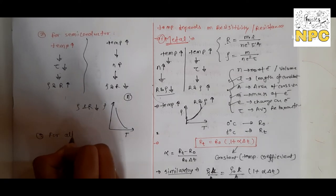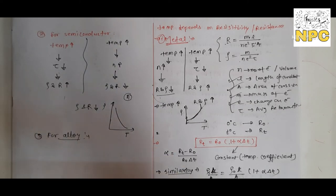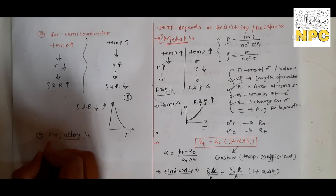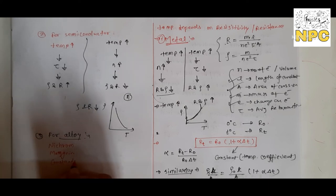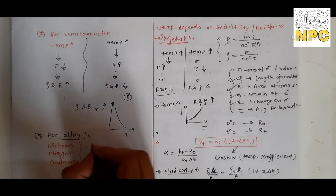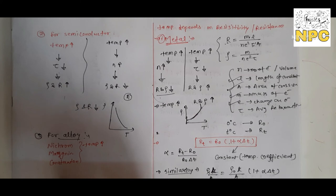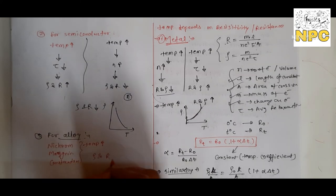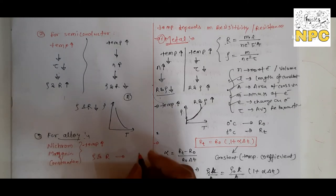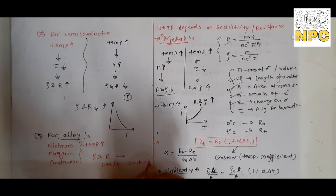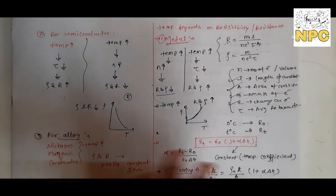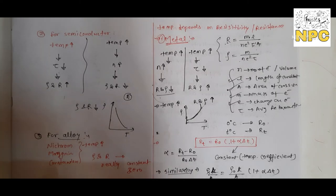Third, for some alloys. Alloys are formed by mixing different metals. Some alloys like Nichrome, Manganin, and Constantan are such that when temperature is increased, resistivity and resistance are not much affected — they remain nearly constant. The change is nearly zero.